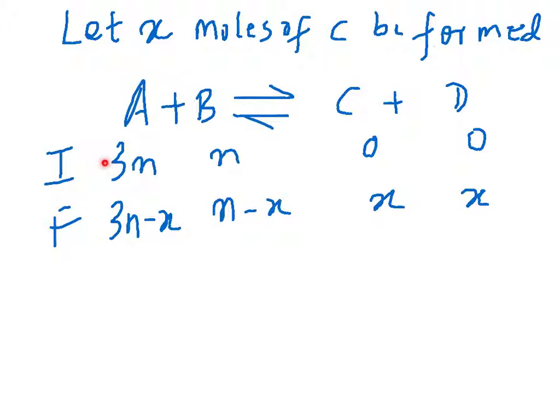Now, here's the initial number of moles, 3N, N and 0 of C, 0 of D. x moles of C and D are formed. Note that 1 mole of B gives you 1 mole of C and 1 mole of D. When 1 mole of B is consumed, you get 1 mole of C and you get 1 mole of D. So, if you have x moles of D formed or x moles of C formed, it means that x moles of B have been consumed. By the same logic, x moles of A also have been consumed. So, finally, we have 3N minus x moles of A, N minus x moles of B, x moles of C and x moles of D.